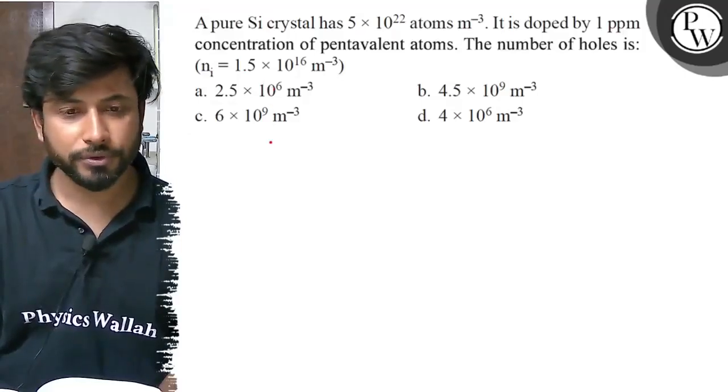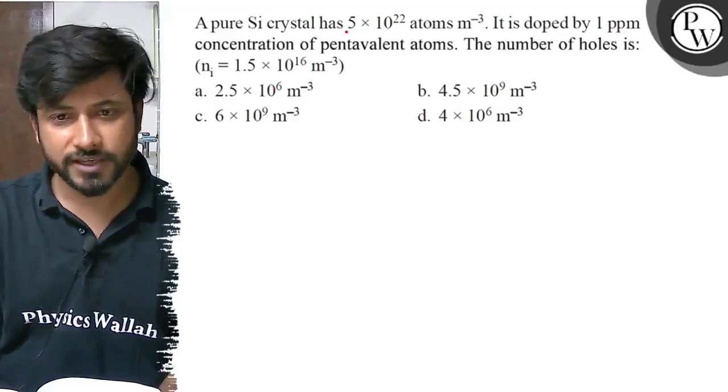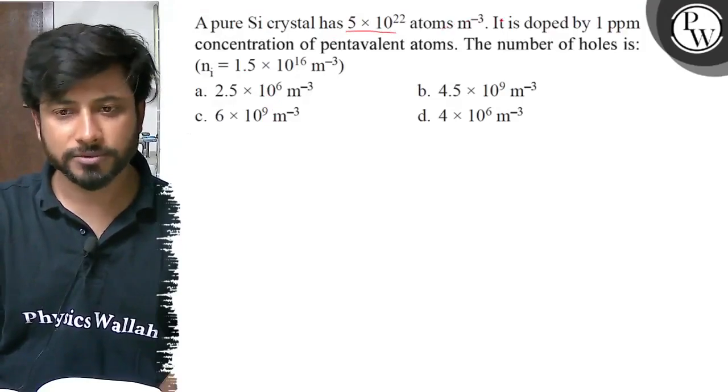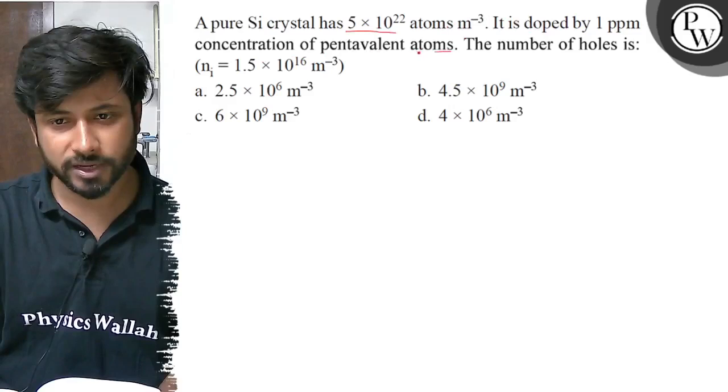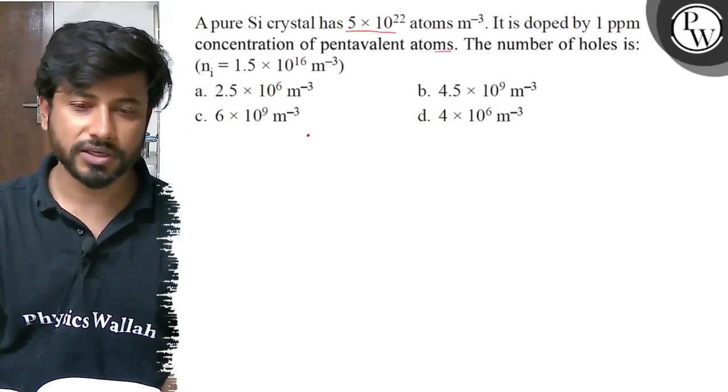Hello, let us see this question. A pure silicon crystal has 5 × 10²² atoms per meter cubed. It is doped by 1 ppm concentration of pentavalent atoms. The number of holes is...